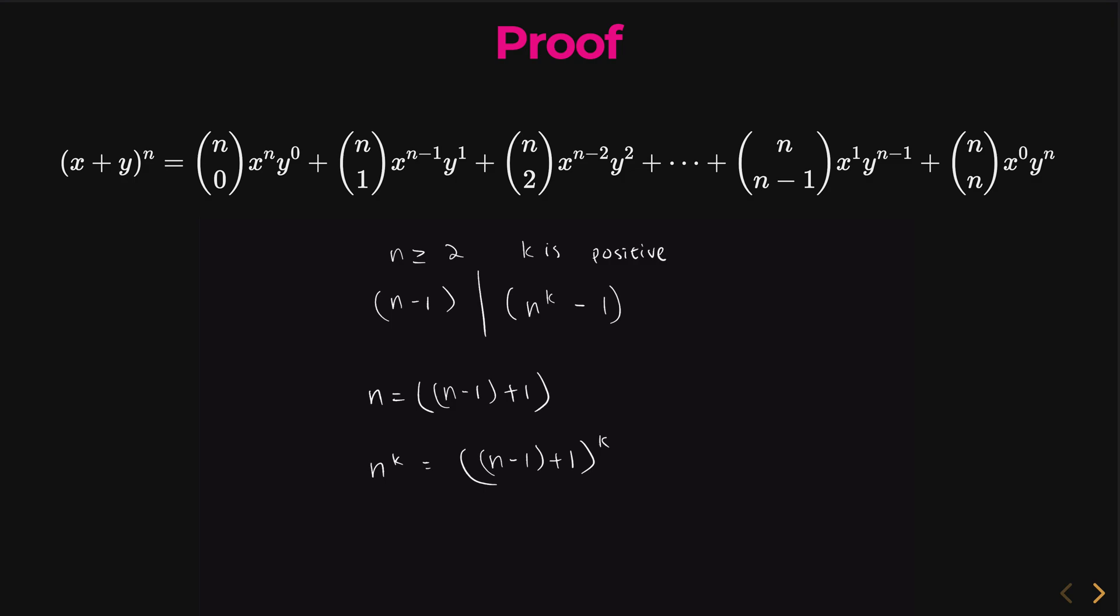Now, we have created a binomial expansion. You can think of n minus 1 to be our x, and you can think of 1 to be our y in a typical x plus y to the k binomial. Now, we can use this to our advantage.